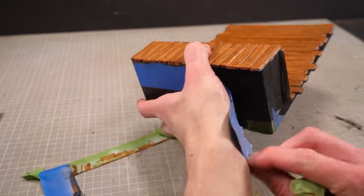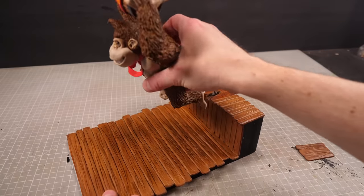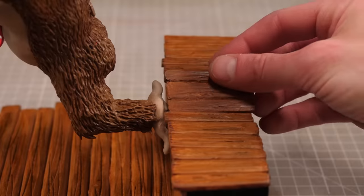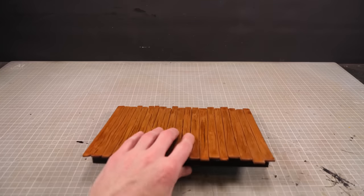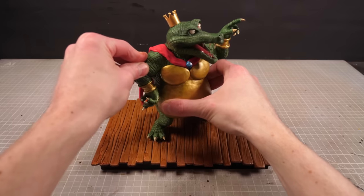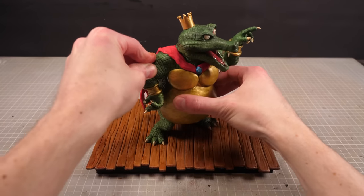I'll then remove the painter's tape, pop the planks off the little hidden hole, insert Kong, and replace the boards. Then King K. Rool gets dropped onto his own platform and that's us done and on to the glamour shots.